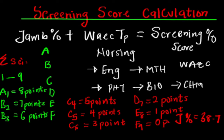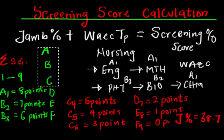Now imagine this student was a very brilliant student. In English she had A1. In Mathematics she also had A1. In Physics she had B3, because she is not very strong in Physics. In Biology she had B2. And in Chemistry she was very brilliant and had A1. This is an excellent result — there is no way this particular student is not going to qualify, because she managed to have three excellent grades.